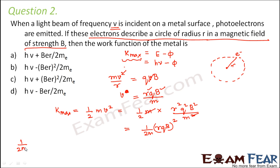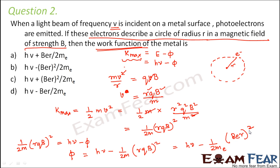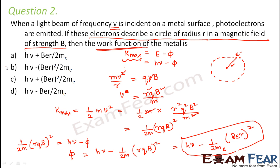Substituting into the photoelectric equation: ½m(rqB)²/m² = hν − φ. Solving for work function φ = hν − (r²q²B²)/(2m). Since q is the electron charge e and m is the electron mass, φ = hν − (1/2m)(reB)². Option B is correct.